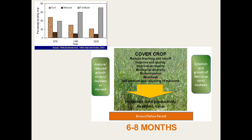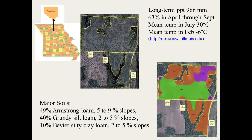A figure showing plant nutrient supply from 1970s to 2020 from different sources — soil, manure, and fertilizer — shows that supply from soil has gone down while supply from fertilizers has gone up. This leads to the study to understand how cover crops can be used to reduce sediment, nitrogen, and phosphorus loss from corn-soybean rotation.